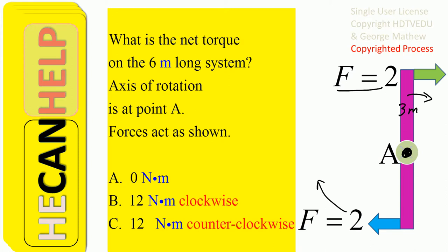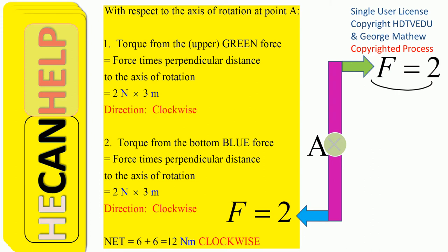Torque is force times perpendicular distance. The torque of the top force is two newtons times three meters, which is six newton-meters clockwise. The torque of the bottom force is also two newtons times three meters, which is also six newton-meters clockwise. So from each force we get two newtons times three meters, both clockwise, giving us six plus six newton-meters.